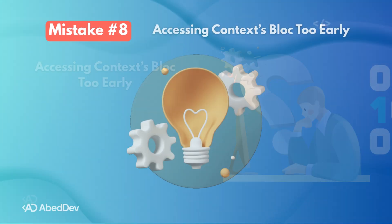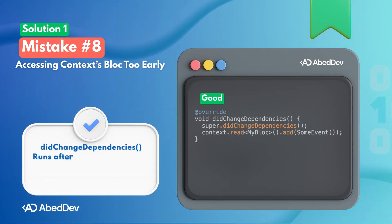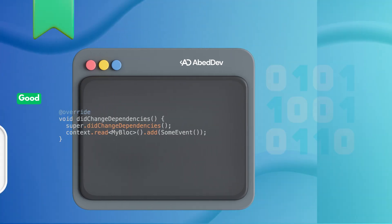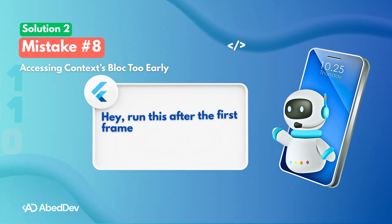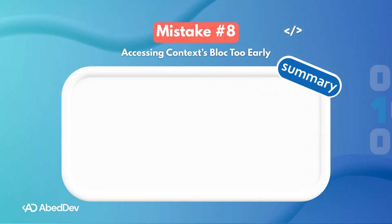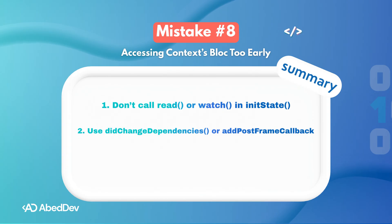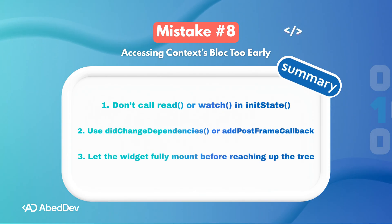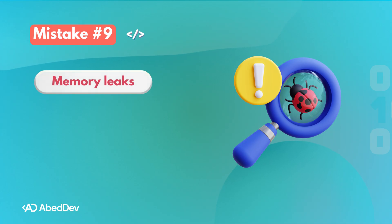You have two clean options to fix this. First, use didChangeDependencies — it runs after the widget is in the tree, so context works fine. Second, use addPostFrameCallback, which tells Flutter to run the code after the first frame when everything is ready. Remember: don't call read or watch in initState. Use didChangeDependencies or addPostFrameCallback, and let the widget fully mount before reaching up the tree.